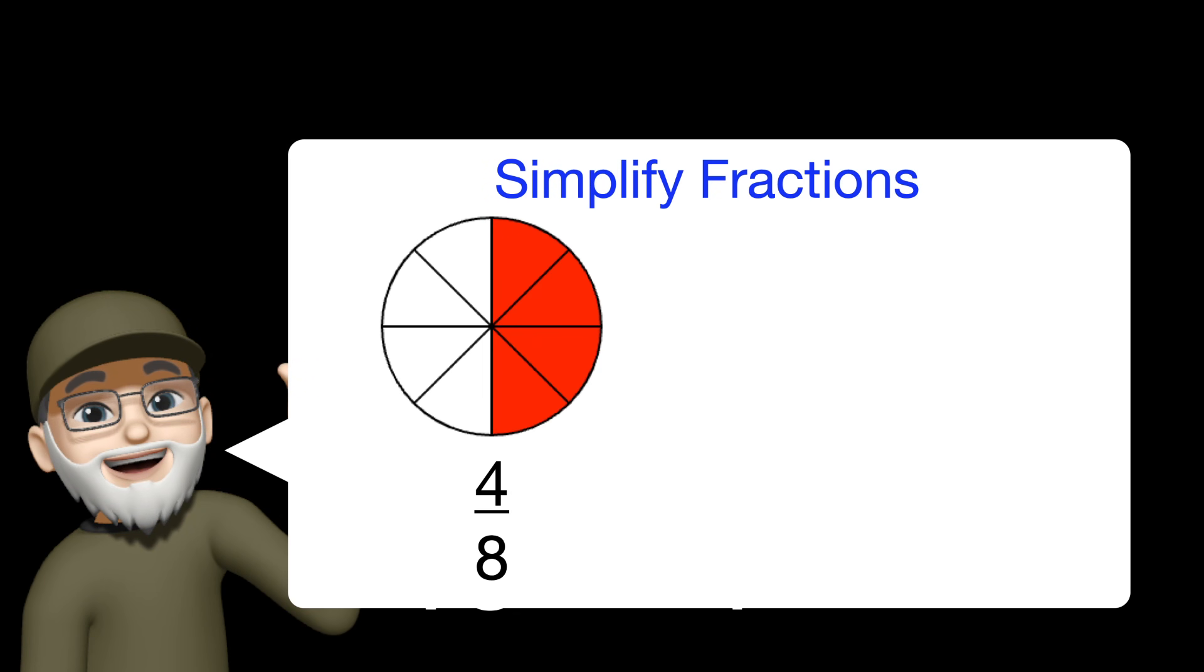When you simplify fractions, for example, 4 eighths, just a reminder, one half would be a simplified fraction. It's the same size. And what we did when you simplify fractions is that the numerator gets smaller, and so does the denominator.